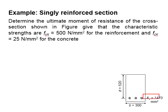Given the area of reinforcement bar is 1470 mm squared, the characteristic strength of the steel is 500 N per mm squared, and the characteristic strength of the concrete is 25 N per mm squared. The section has a width of 300 mm and depth of 520 mm.